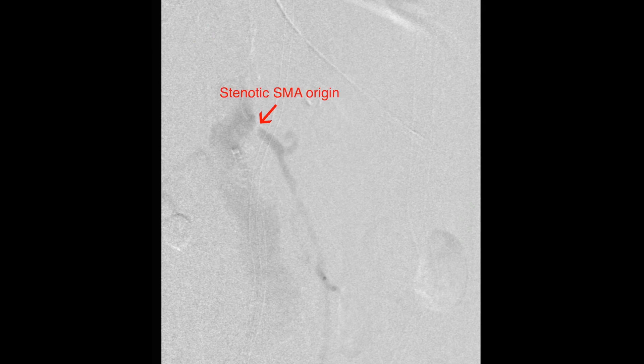This lateral view projection demonstrated a high-grade stenosis of the origin of the SMA and diffusely diseased superior mesenteric artery. Our decision to revascularize the SMA was to improve inflow and help with the symptoms of mesenteric ischemia.